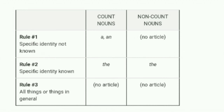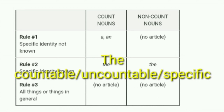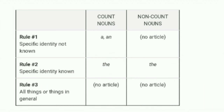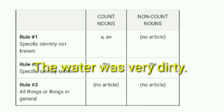Definite article 'the' ko hum kisi bhi specific noun ke pahle use karte hain — ya toh wo noun kisi context mein specific ho, ya phir wo noun kisi bhi tarah se specific ho jiske baare mein baat ki ja rahi ho. 'The' ka use hum countable aur uncountable noun dono ke saath kar sakte hain. For example, 'a water' theek nahi lagta, lekin 'the water was very dirty' — yahan 'the' ka use sahi hai kyunki yeh specific paani ki baat ho rahi hai.